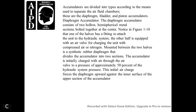Accumulators are divided into types according to the means used to separate the fluid charge: diaphragm, bladder, and piston accumulators. The diaphragm accumulator consists of two hollow hemispherical metal sections bolted together at the center. One half is attached to the hydraulic system; the other half is equipped with an air valve for charging the unit with compressed air or nitrogen. A synthetic rubber diaphragm mounted between the two halves divides the accumulator into two sections. The accumulator is initially charged with air through the air valve at approximately 50% of the hydraulic system pressure. The initial air charge forces the diaphragm upward against the inner surface of the upper section.